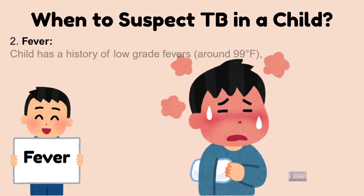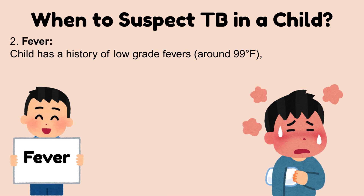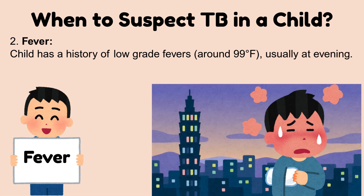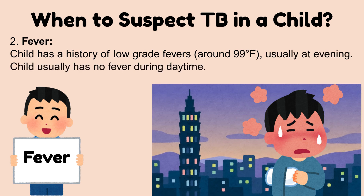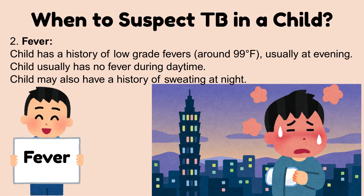Fever: the child has a history of low-grade fevers around 99 degrees Fahrenheit. Fever occurs usually in the evening, and the child usually has no fever during the daytime. The child may also have a history of sweating at night.